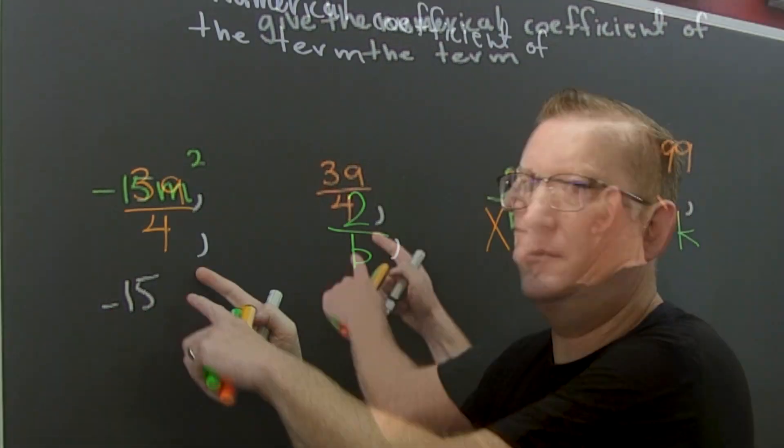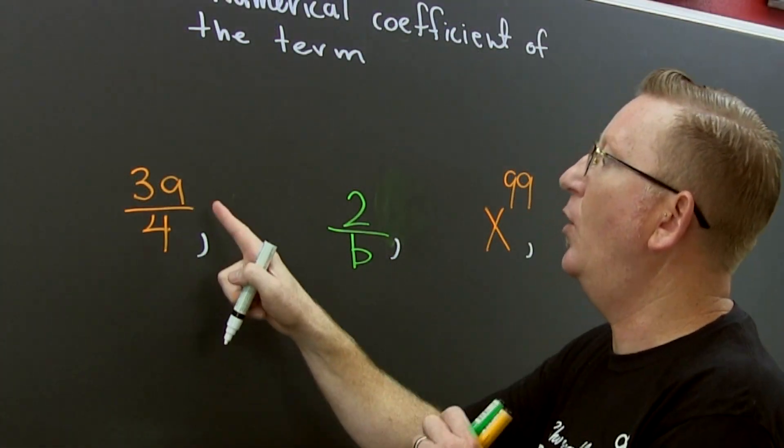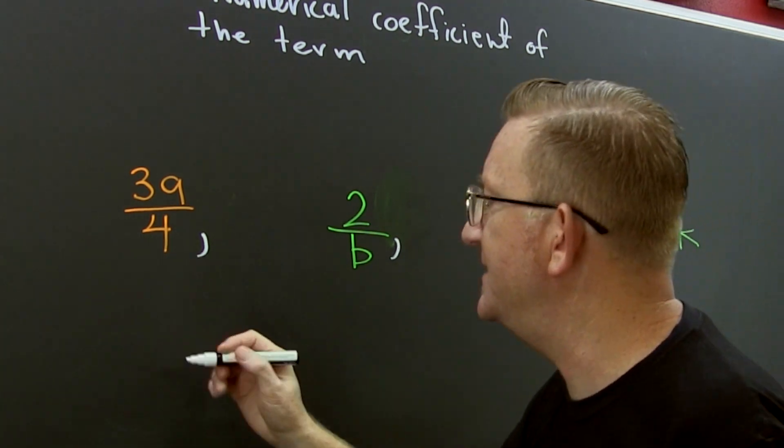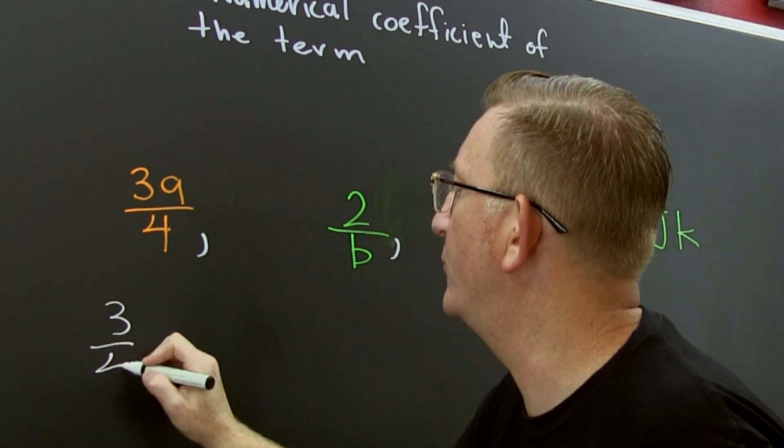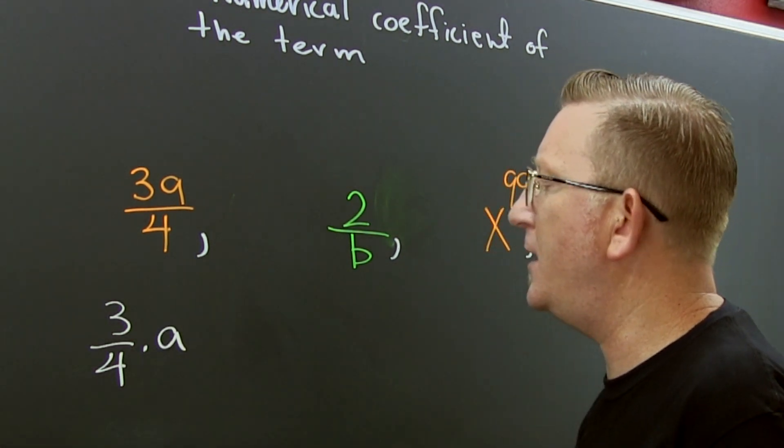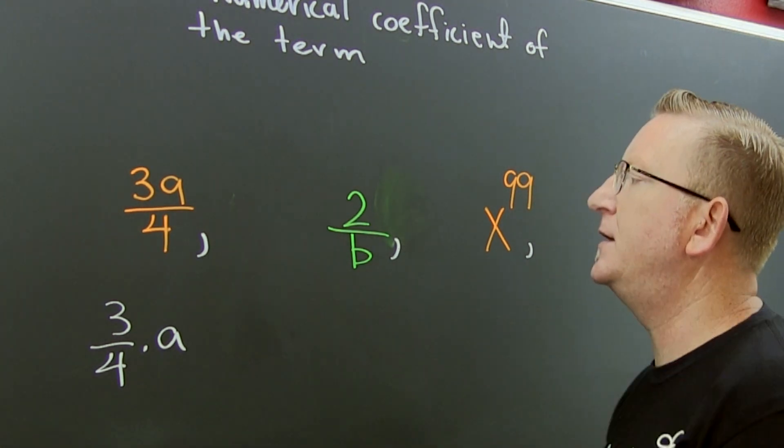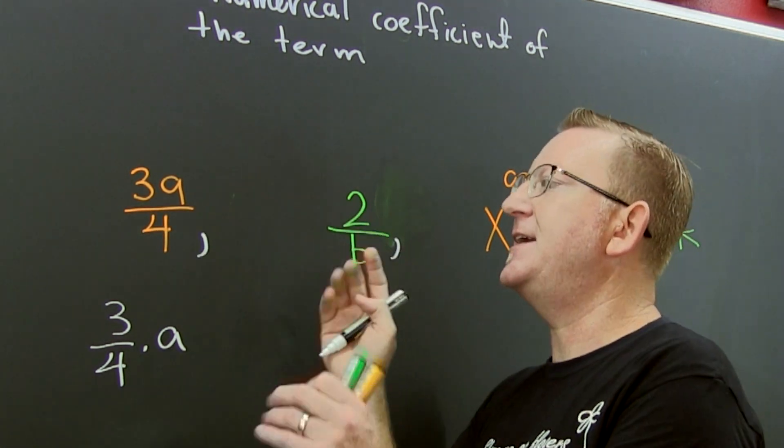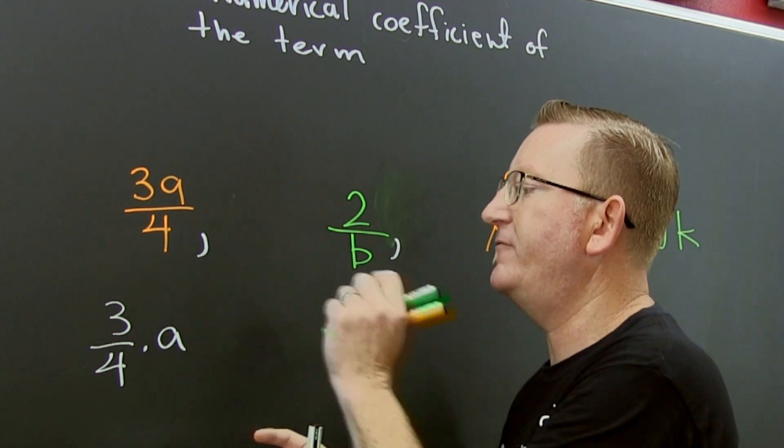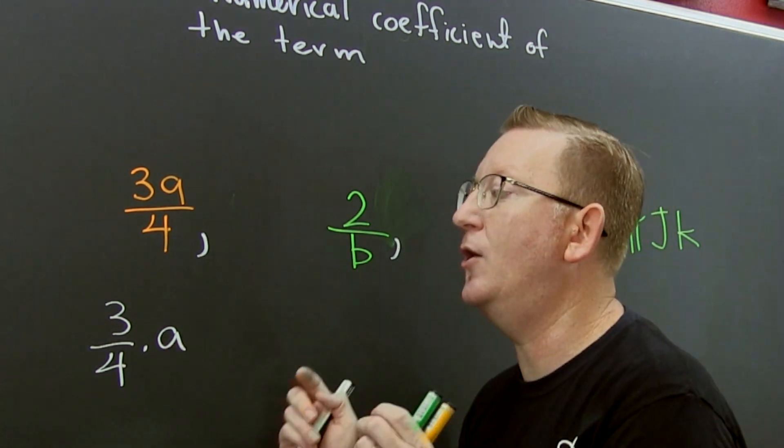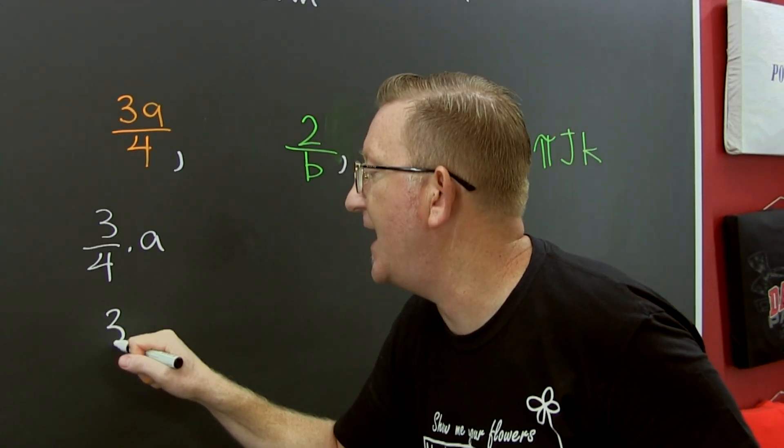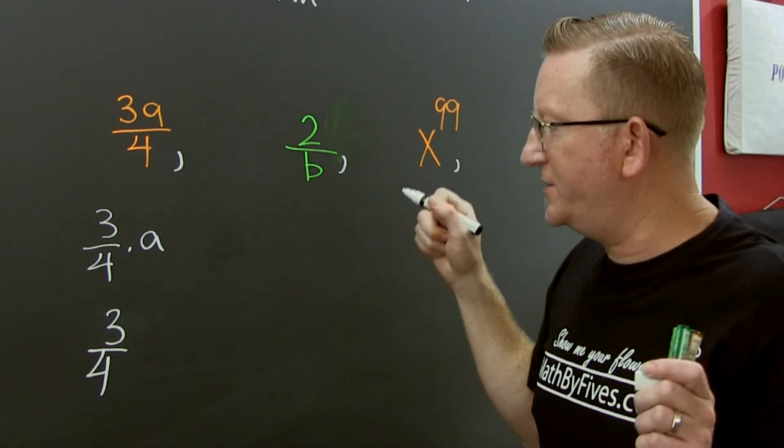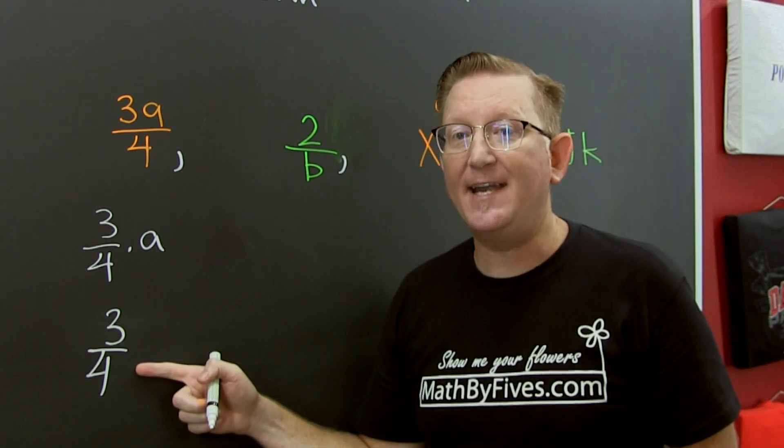I can see this as three fourths times a, because if I rewrite it like that, it's three times a divided by four, which is the same as three fourths of a. So when I write it like that, I can see that's three over four, and that is gonna be the numerical coefficient for that term.